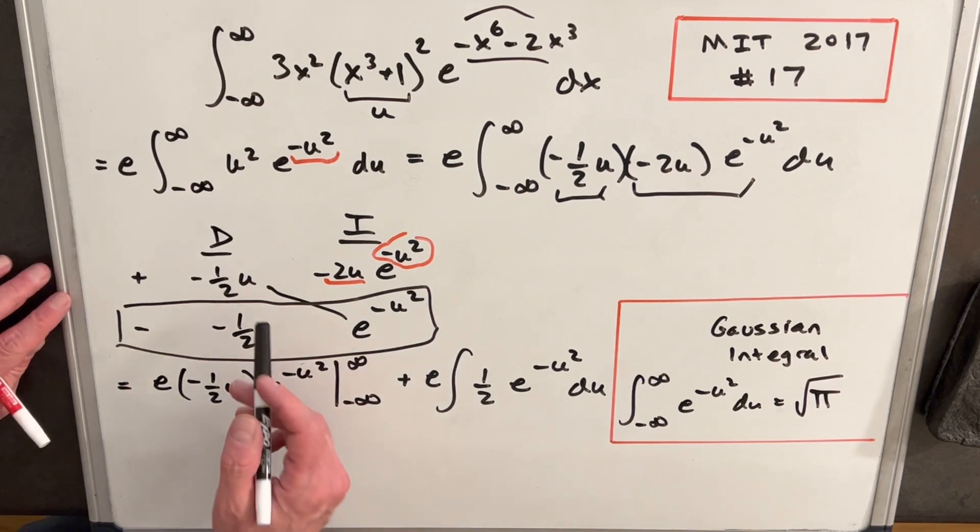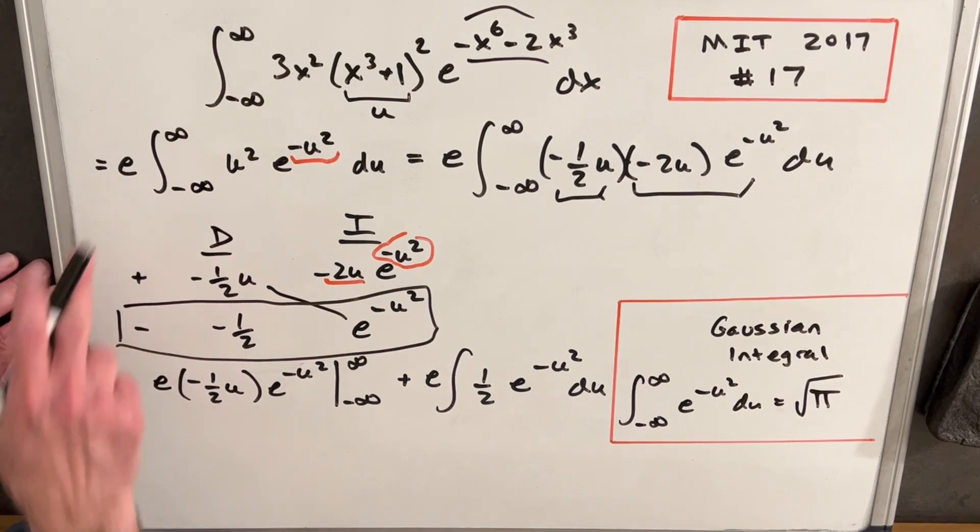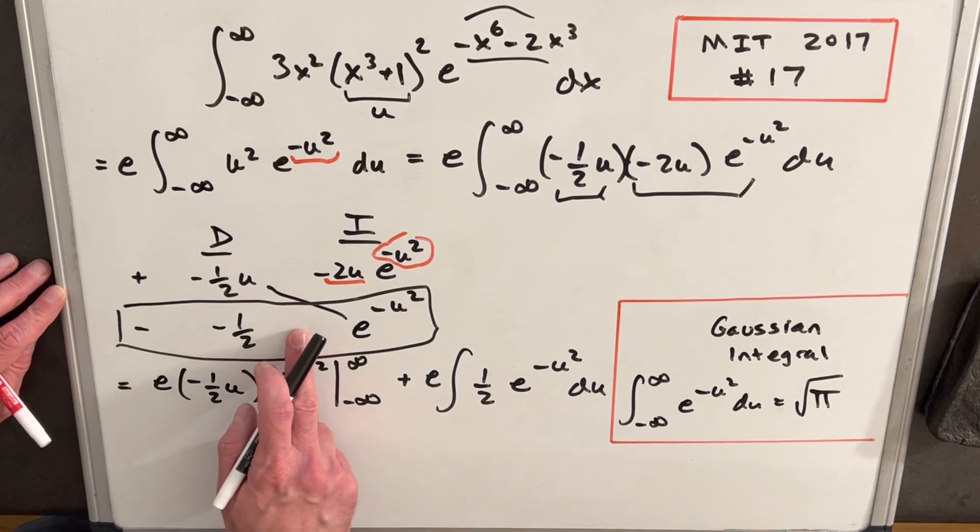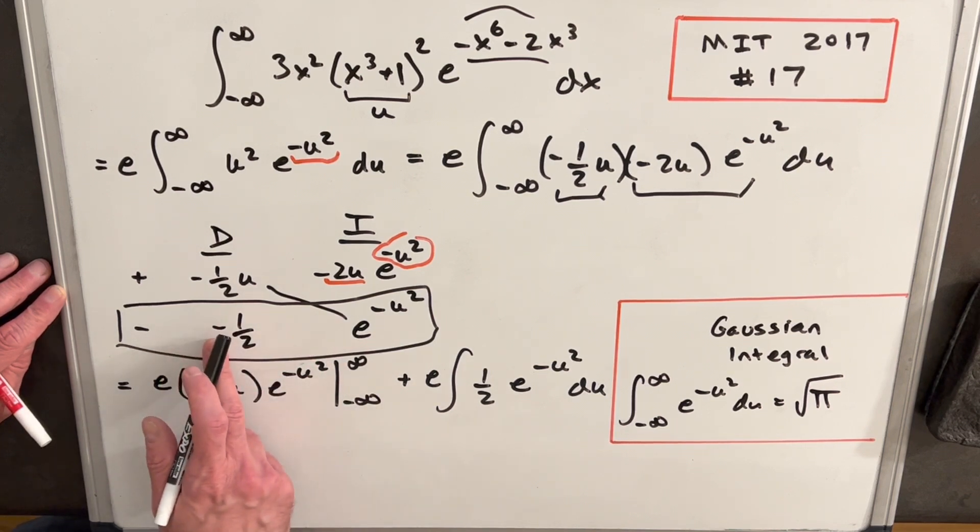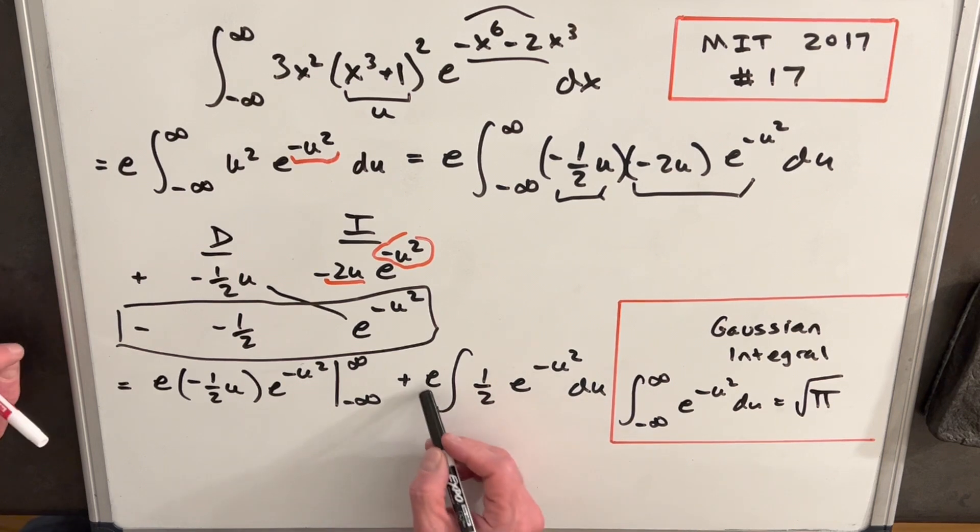Okay, so just rewriting this, we have our diagonal here, minus half u, e to the minus u squared, but don't forget the e that we had in front. And then we just need to evaluate this from infinity to minus infinity. Then this right row here, minus times minus is going to cancel, so we're just going to have a half, e to the minus u squared, and again, we have this e in front.